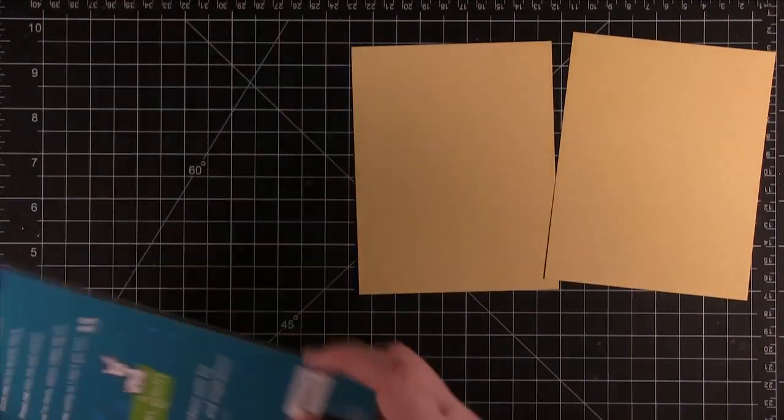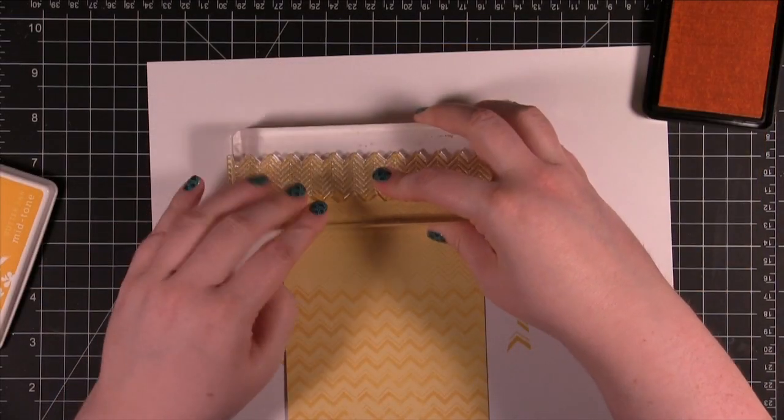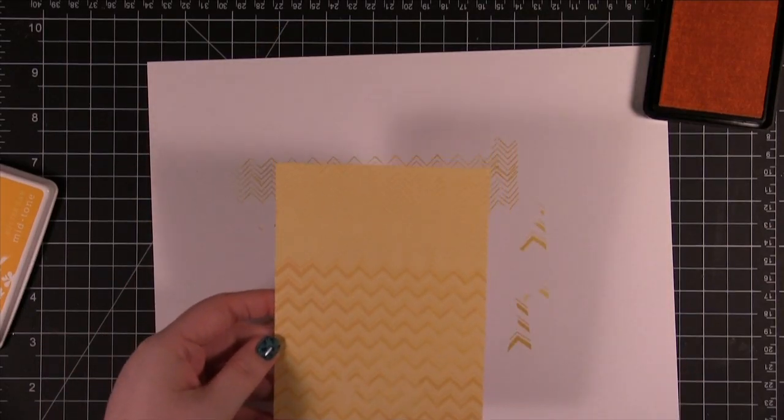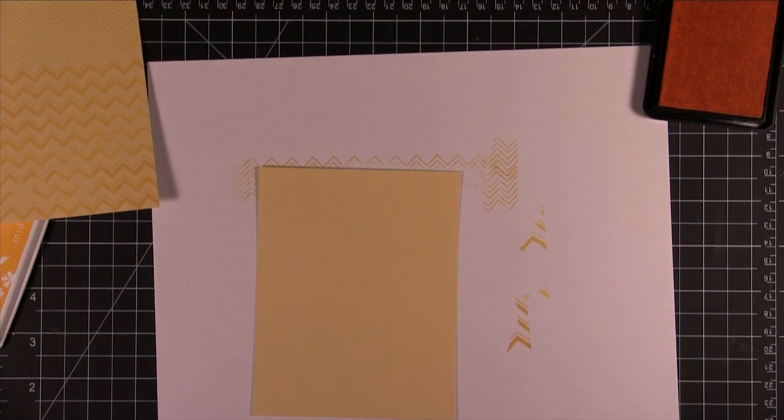I'm going to start by stamping the Butter Bar. I have this one stamped. I'm going to go ahead and do the other piece as well except this time I'm going to be using Versamark.